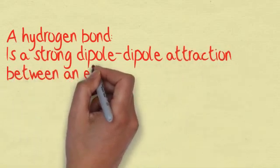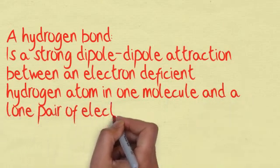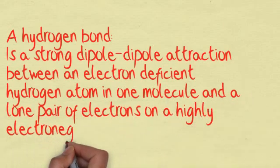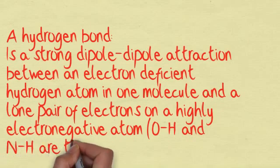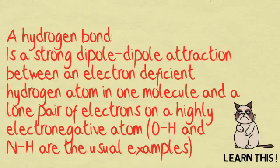Another common exam question is defining a hydrogen bond. This is a strong dipole-dipole attraction between an electron-deficient hydrogen atom in one molecule and a lone pair of electrons on a highly electronegative atom. OH and NH are the usual examples.